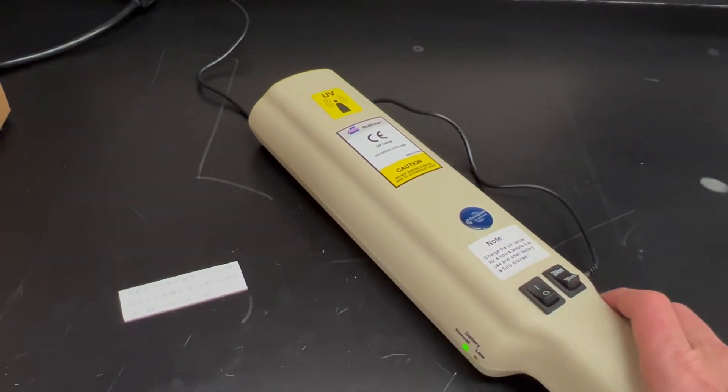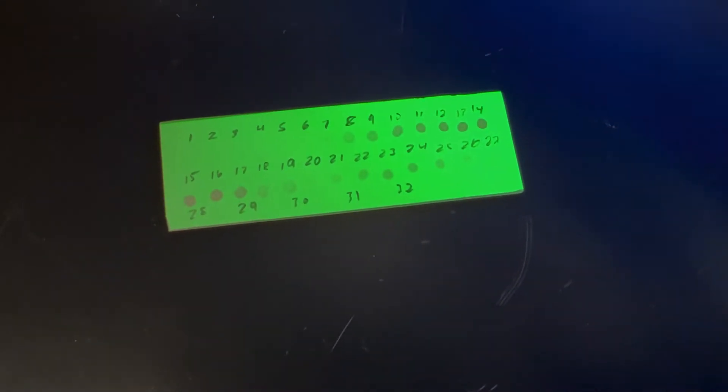Next, I would take that TLC plate and look at it under the UV light. So here I can see that the UV active compounds start showing up about fractions eight or nine, then they fade, but then they keep on going until maybe fractions 27. So those would be the fractions that I'd want to next run TLC on.